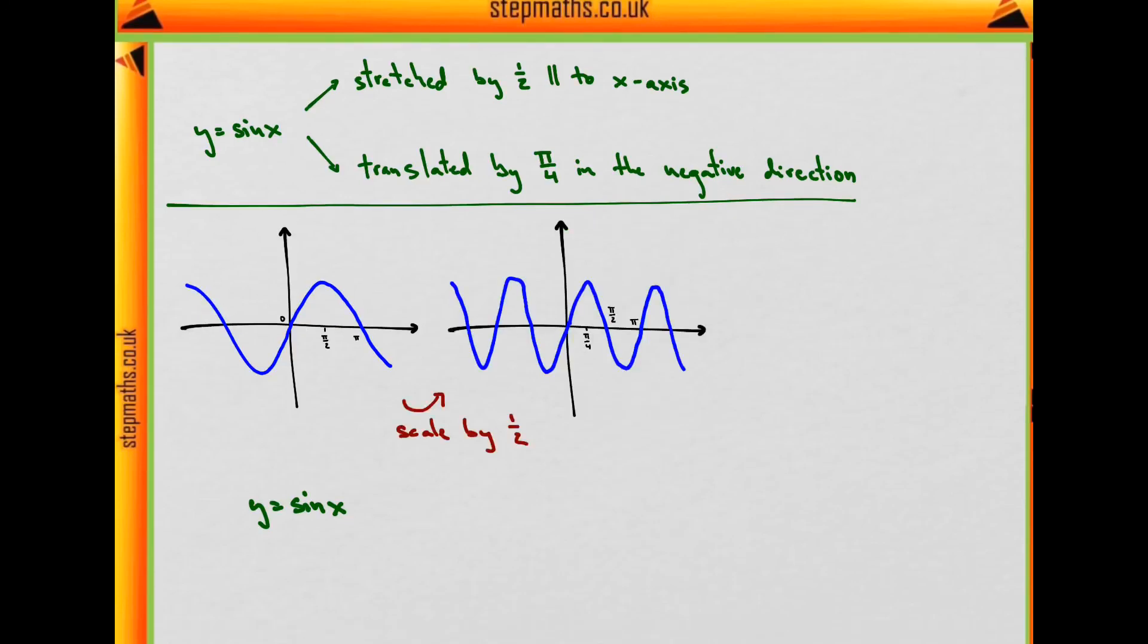And here we can see what happens when we scale the sine function by a factor of 1/2 in the x direction. Stretching by a factor less than 1 is basically squeezing. And because it now goes up and down twice as fast as it did before, its equation is y equals sine of 2x.